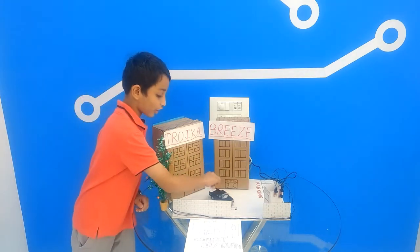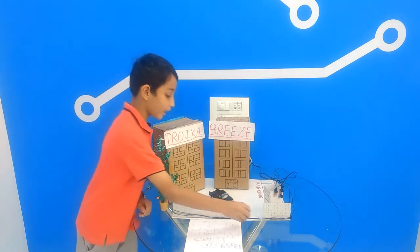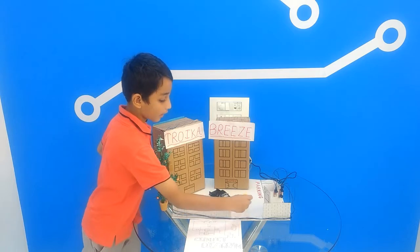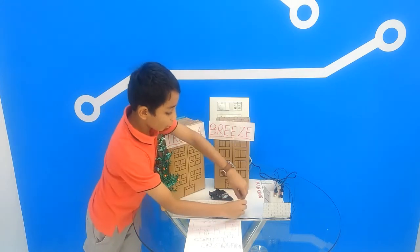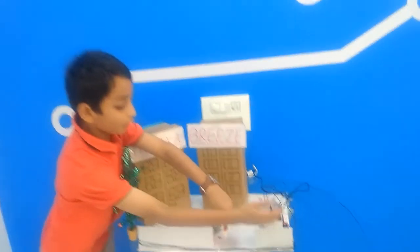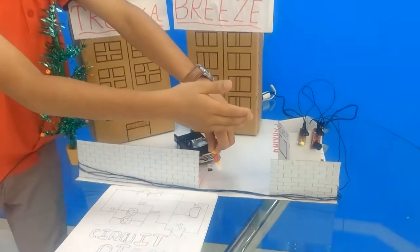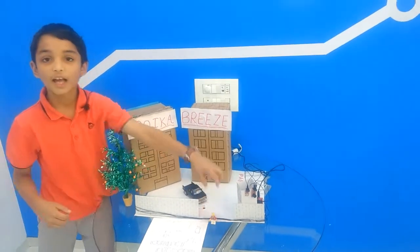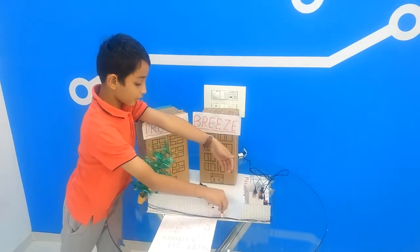If there is any chance of a thief or burglar coming in, the IR sensor will sense the object and the buzzer and the LED will glow as you can see, and the security guard will be alarmed about it. Henceforth, our automatic guarding system.